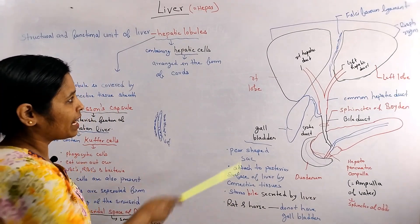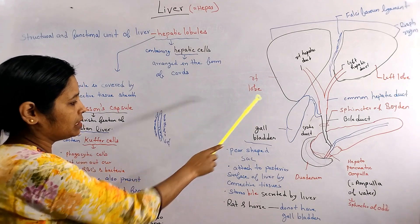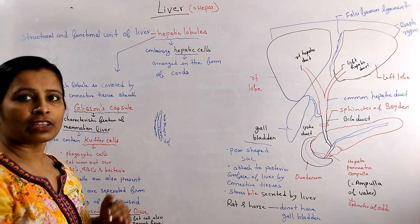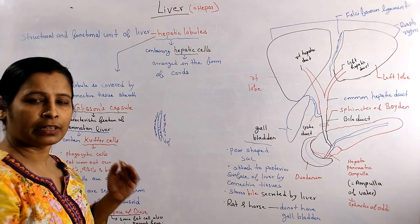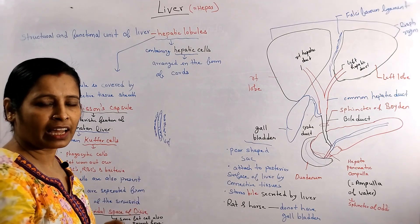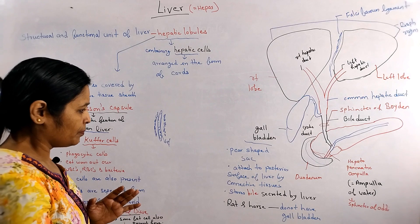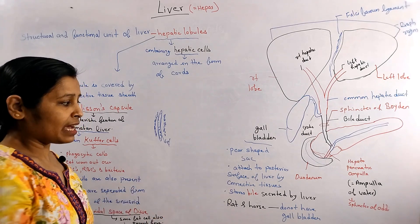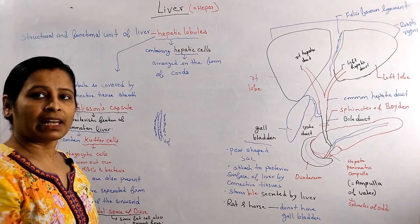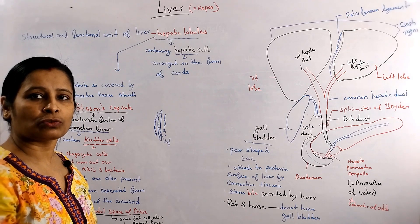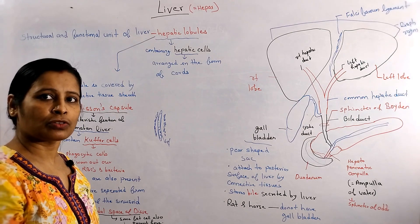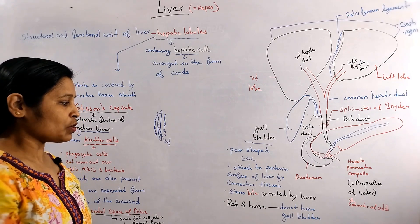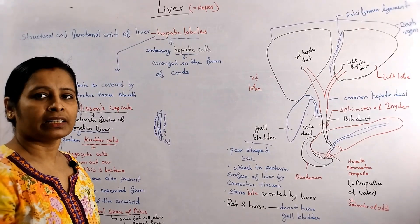The gallbladder is attached to the posterior surface of the liver by connective tissue. The liver produces bile and stores it in the gallbladder. Remember that in rats and horses, there is no gallbladder.